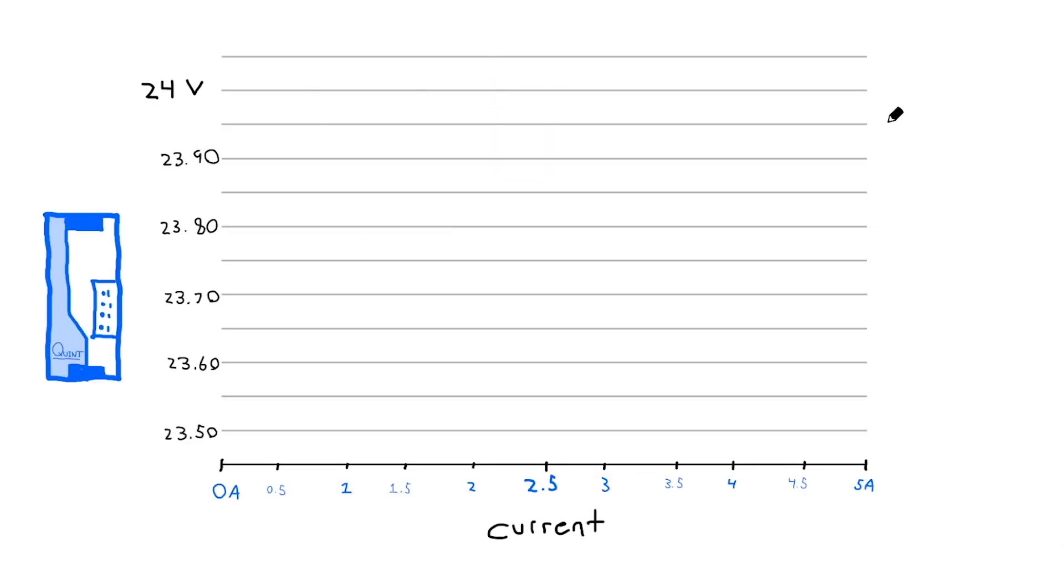It is first important to understand how power supplies share a load. Most power supplies are going to have a very small drop in voltage as the load increases, usually around 0.1 volts. So if this QUINT is operating at 24.05 volts at 0 amps, it will drop to 23.95 volts at 5 amps.